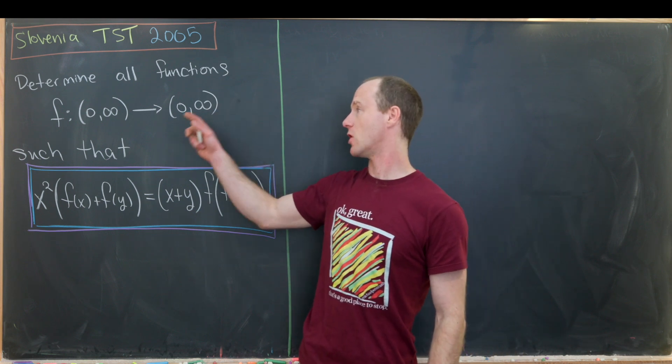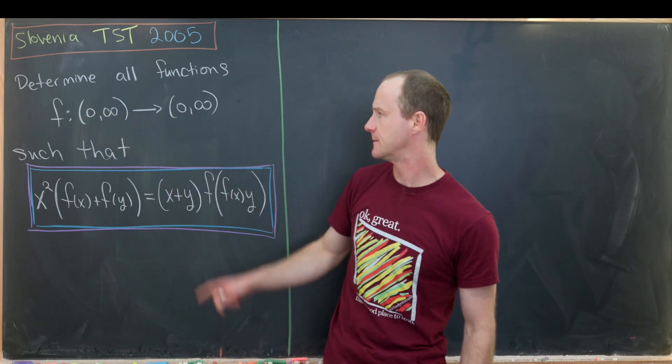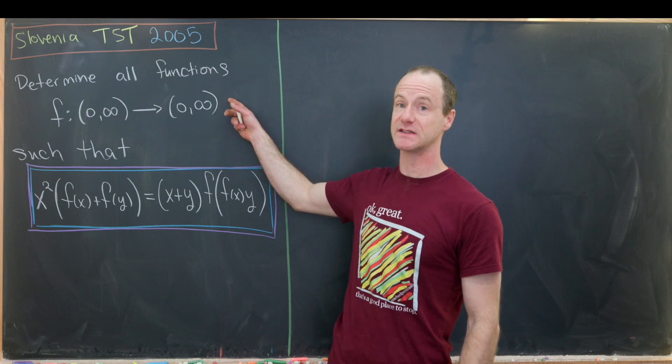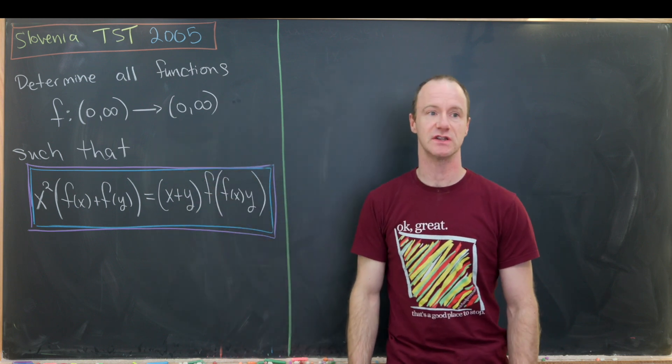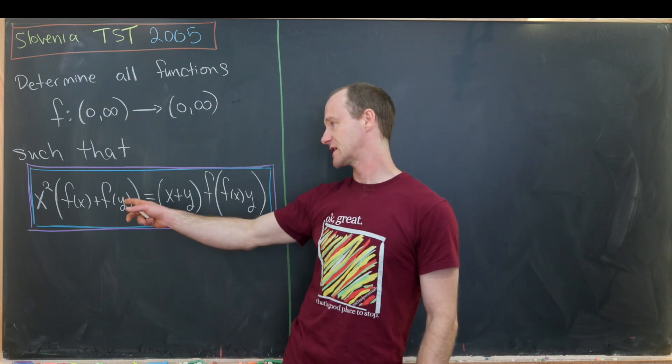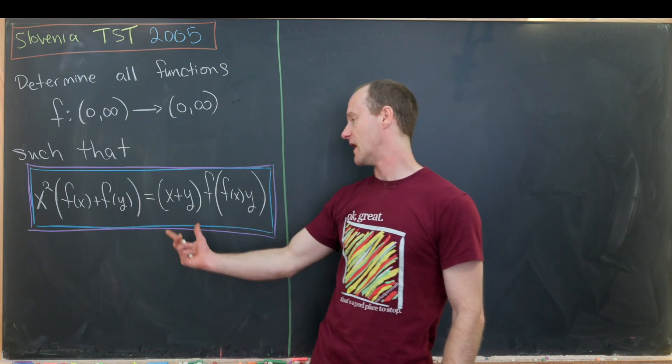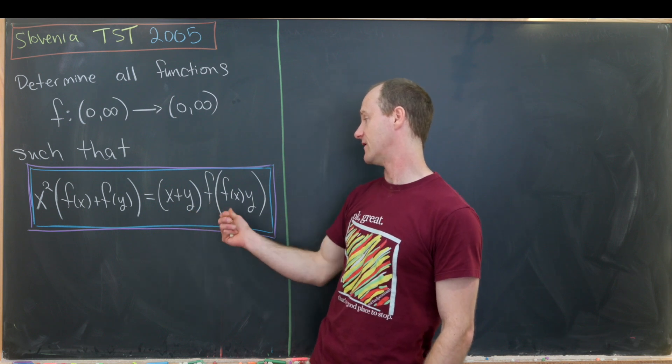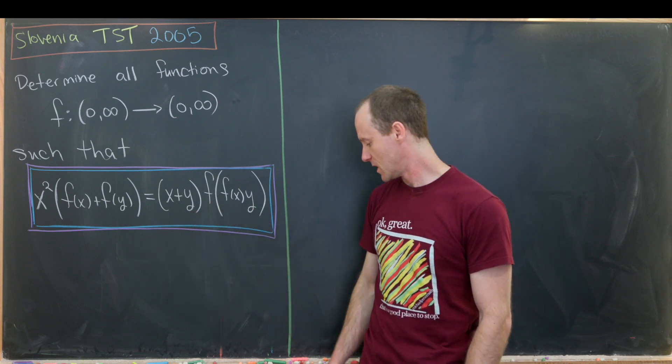Our goal is to determine all functions from the interval (0,∞) to (0,∞), so by this I mean the positive real numbers, satisfying this functional equation. We have x² times the quantity f(x) + f(y), and then we have (x+y) times f evaluated at f(x) times y.